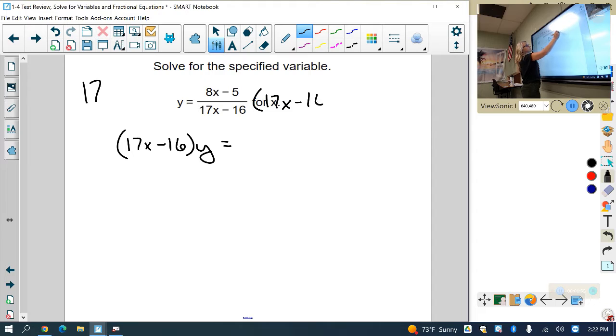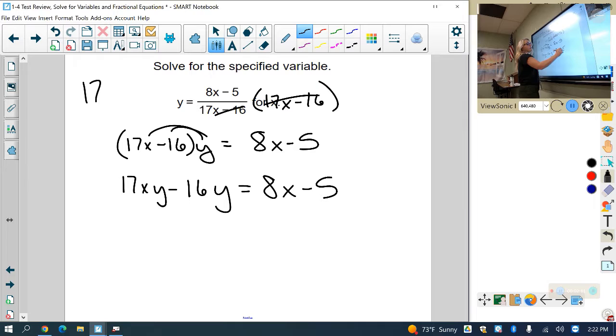or 17x minus 16, they're going to cancel. So I'm left with 8x minus 5. Now we're going to distribute, combine like terms, and go fishing. So we have 17xy minus 16y equals 8x minus 5.